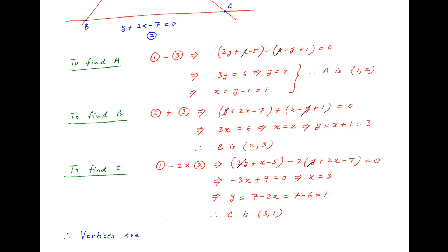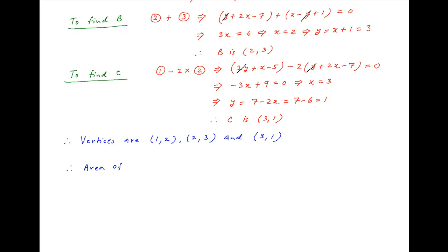Therefore, the three vertices of triangle ABC are A(1, 2), B(2, 3), and C(3, 1). The area of triangle ABC is equal to half of the determinant where the elements of the first column are the x-coordinates of the three vertices — that is, 1, 2, and 3 — the elements of the second column are the y-coordinates — that is, 2, 3, and 1 — and all elements of the third column are equal to 1.